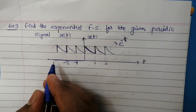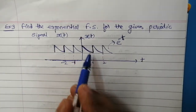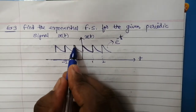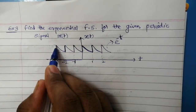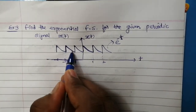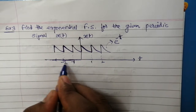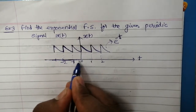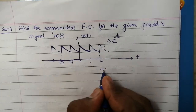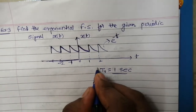Let us take another example. In this particular example, we have to find the exponential Fourier series for the given periodic signal. This signal is periodic, repeating its value every one second — from minus two to minus one, minus one to zero, zero to one, and so on. So the time period of the given signal is one second.